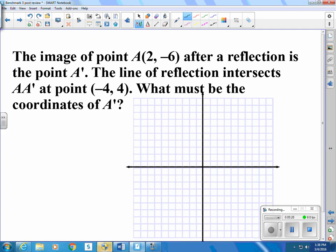The image of point A at (2, -6) after reflection is the point A prime. The line of reflection intersects A, A prime, that means the line segment going from A to A prime, at point (-4, 4).